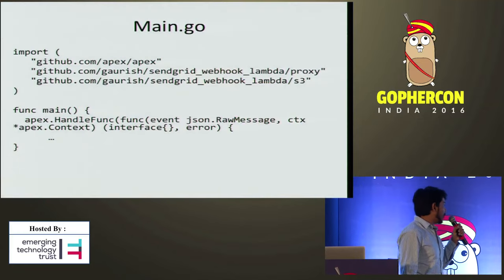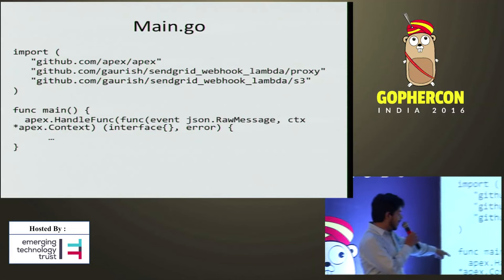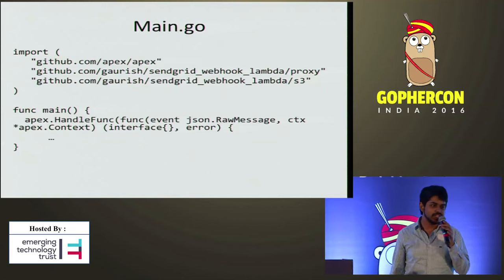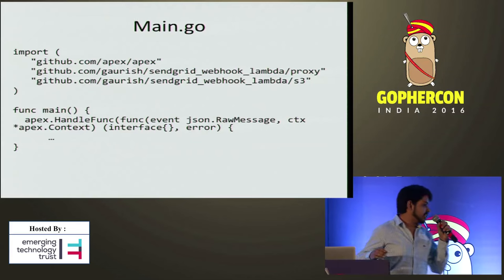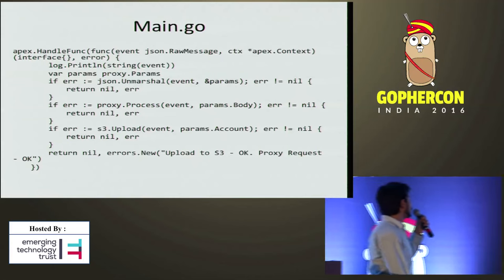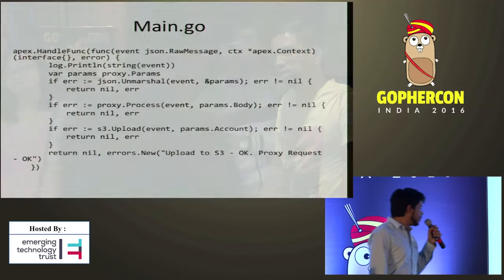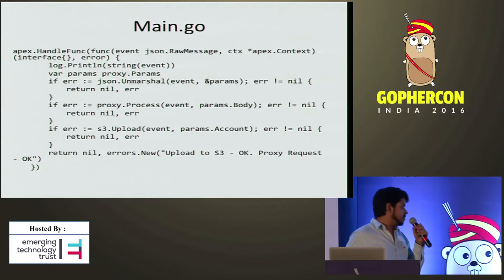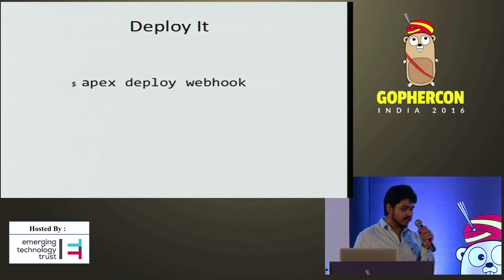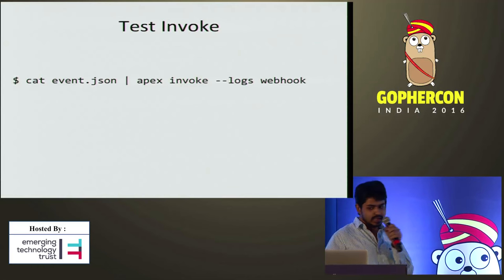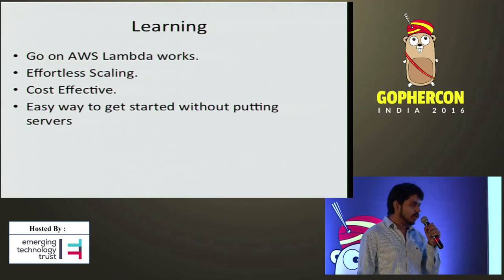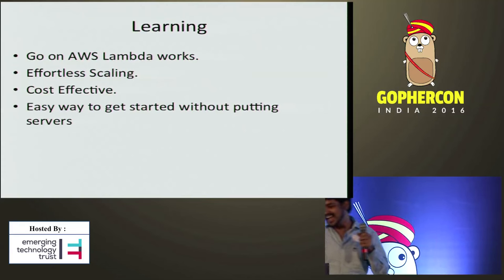This is the structure of the project JSON. We specify the project name and description. It does two things: proxy unsubscribe events, and log all events to S3 for later analytical usage using Redshift. Runtime is set to Go and timeout is 10 seconds. The magic is in Apex's handler function which gives us the event as a parameter from the HTTP API and returns an interface and error. We basically do three things: decode the JSON, check for any unsubscribe calls to proxy, and upload to the server. Deploying is very simple with Apex. The learning is that Go on AWS Lambda works - effortless scaling to millions of requests, and it's almost free with one million requests per month.